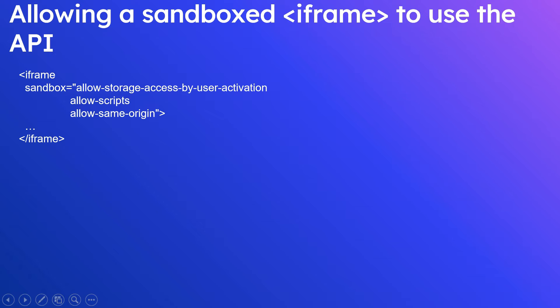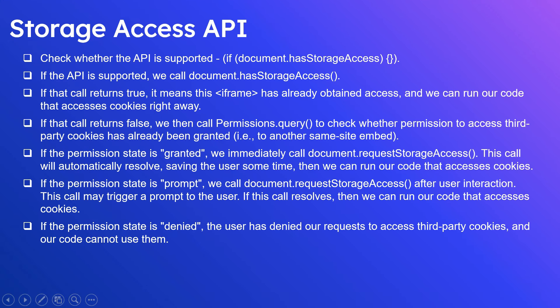If the iframe is put in a sandbox, the main website has to include a special 'allow-storage-access-by-user-activation' permission, along with 'allow-scripts' and 'allow-same-origin' permissions. This enables the embedded content to make requests to the Storage API, run scripts, and access cookies, but only when the user has activated it. If an iframe is sandboxed, these three permissions must be defined.